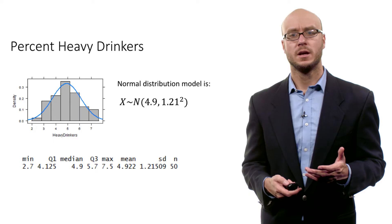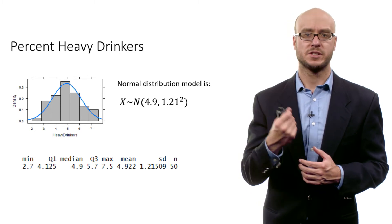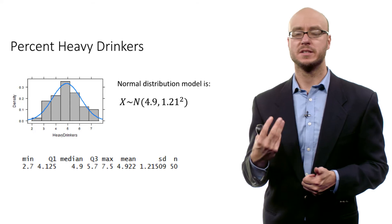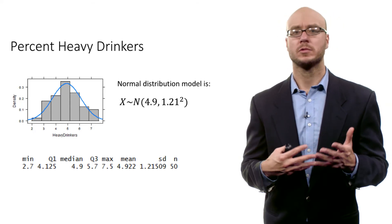So in this case, it's roughly normal. If we look at percent heavy drinkers, we have this model based on this mean and this spread. And you look at the actual data, it's roughly normal for a histogram.